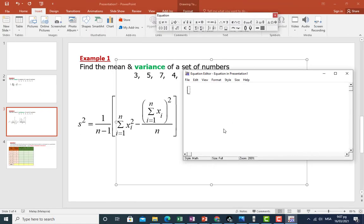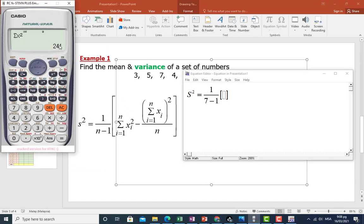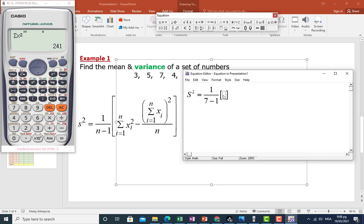Now we are going to substitute into the formula. 1 over 7 minus 1, 241 minus 39 square divided by 7.